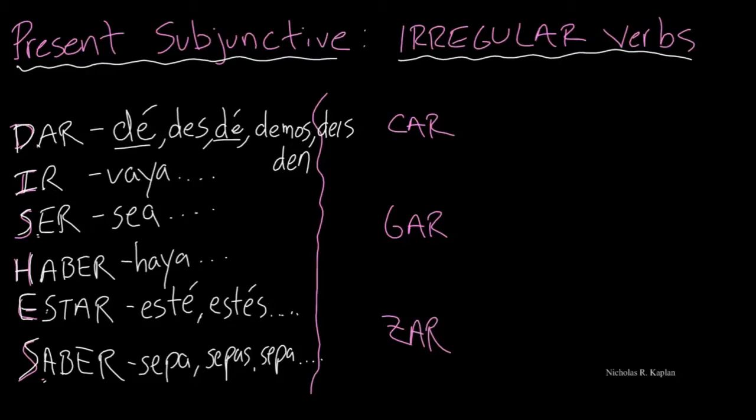The other thing that we need to look at and be careful with are our CAR, GAR, and ZAR verbs. And if you've studied the preterite or your commands, these have also come up in those tenses. And so when we have a verb that ends in CAR, like buscar,